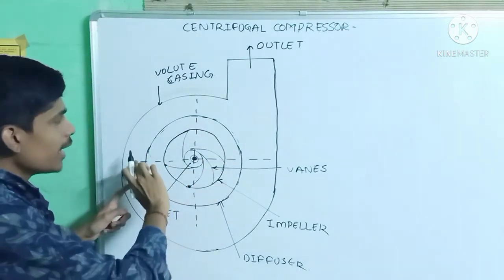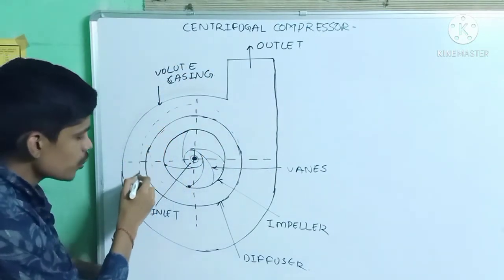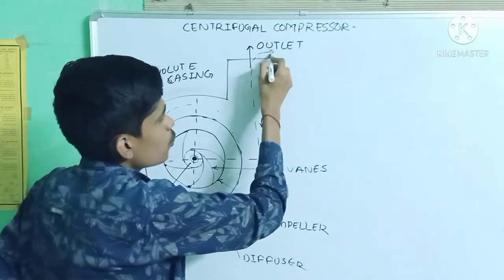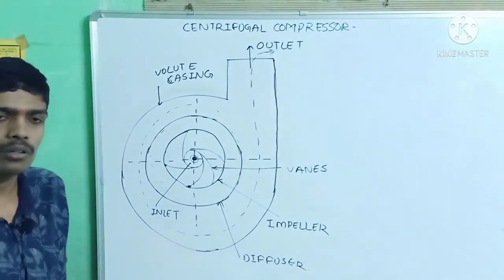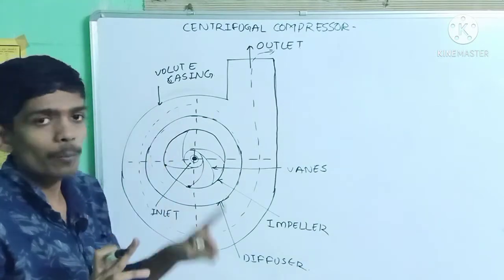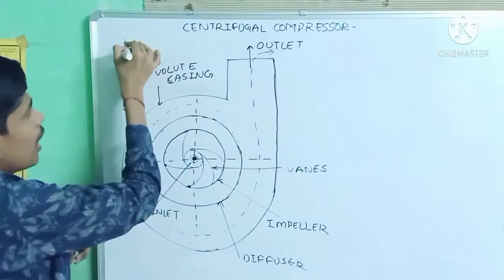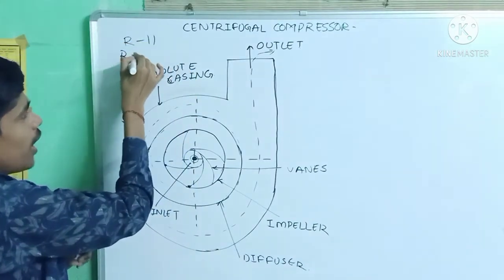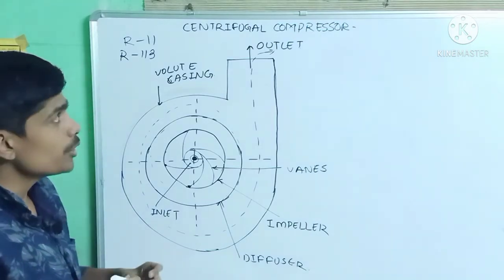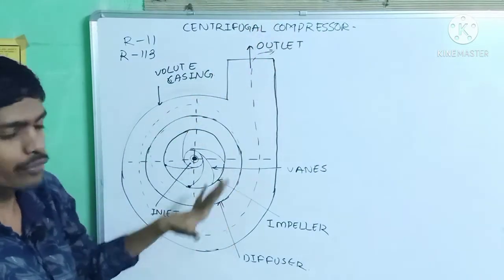As the refrigerant passes through the volute casing, kinetic energy is further converted into pressure energy, and finally it is discharged through the outlet. For centrifugal compressors, refrigerants with high displacement, large displacement, and low condensing pressure should be used — such as R11 and R113.